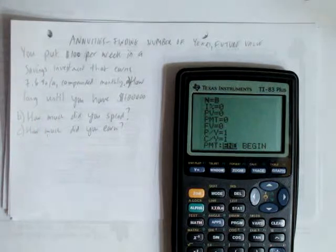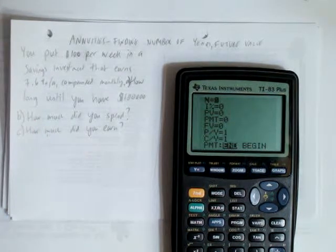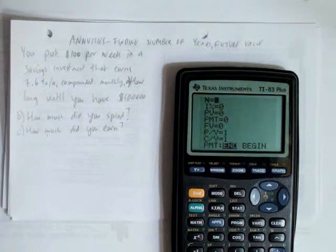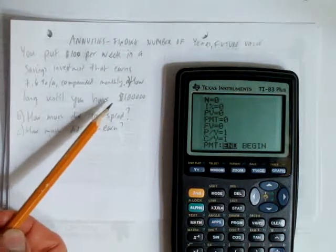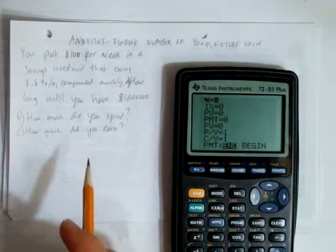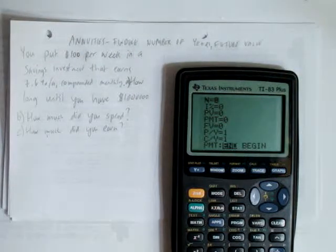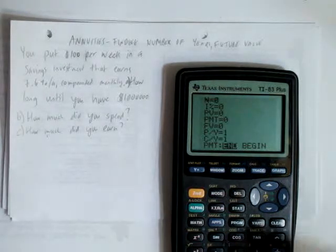Because in this problem you put $100 per week in a savings investment that earns you 7.6% per year, that's what the slash A is, compounded monthly. So part A, how long do you have $1,000,000, it says $100,000, let's make it $1,000,000. How much did you spend and how much did you earn? So let's first figure out how long it's going to take at $100 per week to make $1,000,000.